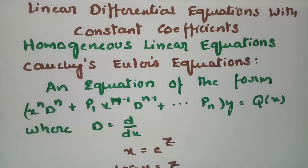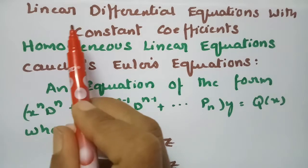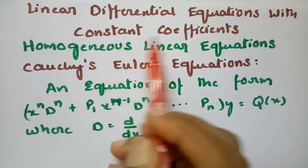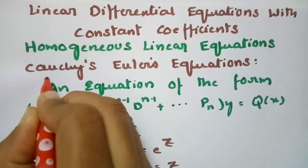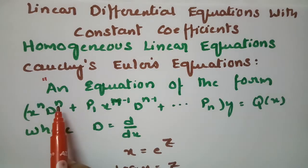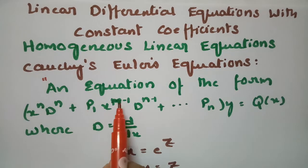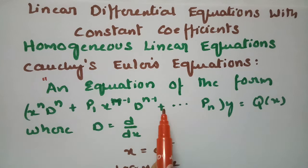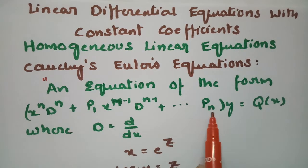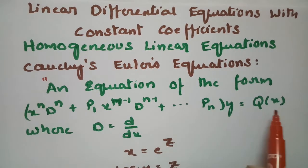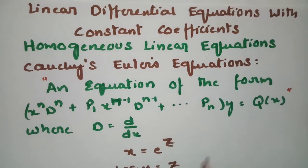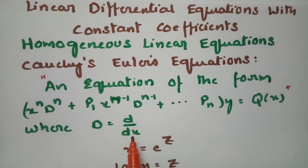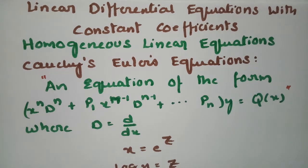Today's video I am going to explain Cauchy's Euler equation, and this topic is from linear differential equations with constant coefficients. An equation of the form x^n * D^n + p1 * x^(n-1) * D^(n-1) + ... + pn of y equals q(x) is called Cauchy's Euler equation. Here D is nothing but d/dx, the derivative with respect to x.